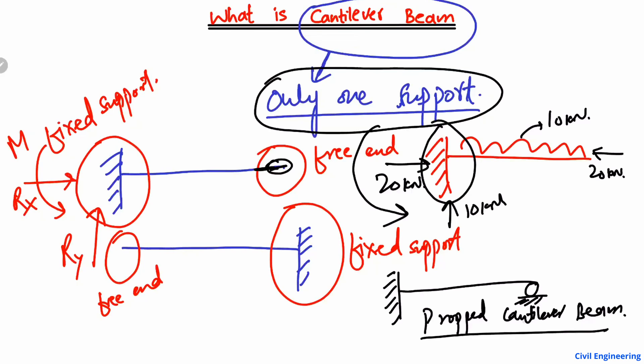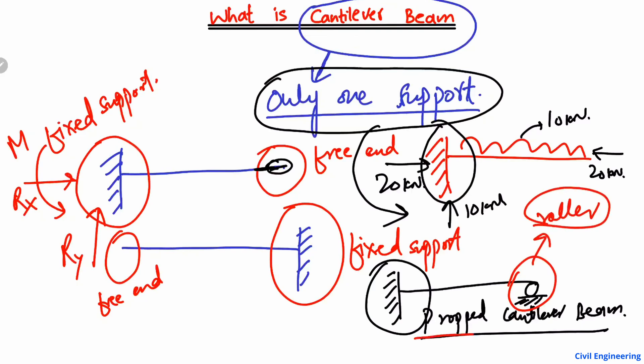The propped cantilever beam is an indeterminate beam. I have uploaded some videos on my YouTube channel — please go there and watch the difference. The propped cantilever beam is indeterminate because in this case we have four different support reactions. So the beam in which one end is fixed and the other end is provided with a roller support is known as a propped cantilever beam, which is a sub-branch or sub-type of the cantilever beam.